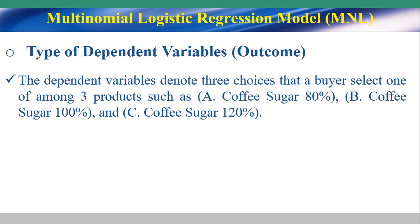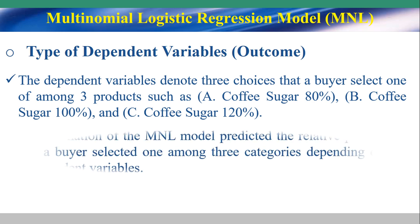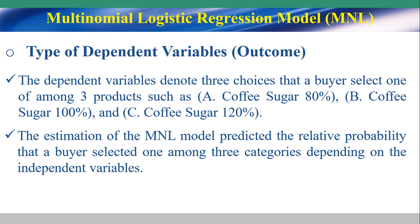The dependent variable is the choice that a buyer selects among three products: A — coffee that has 80% sugar, B — coffee that has 100% sugar, and C — coffee that has 120% sugar. The estimation of the multinomial logistic regression model predicts the relative probability that a buyer selects one among these three categories, depending on the independent variables.